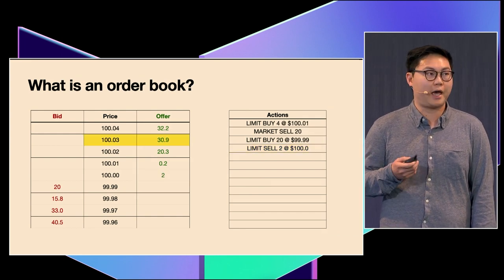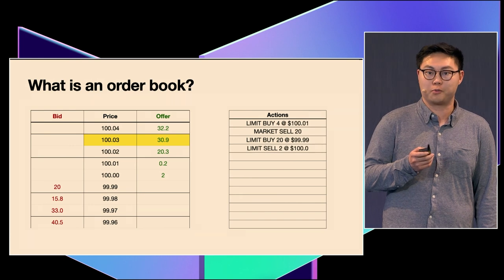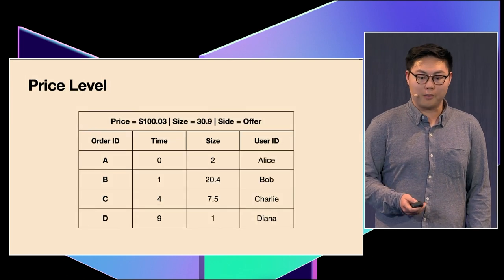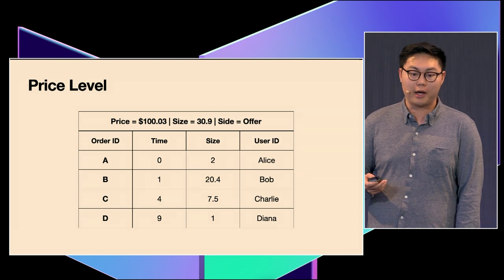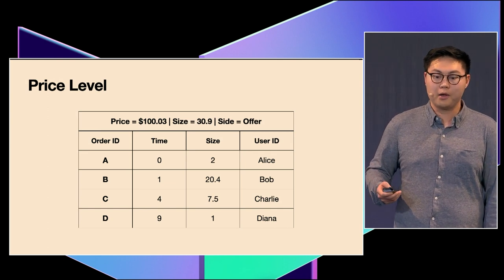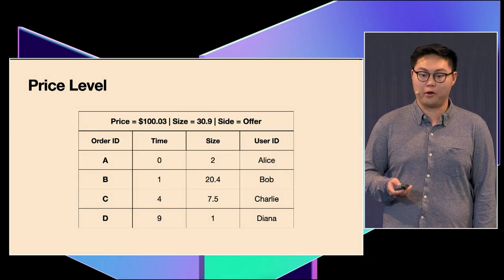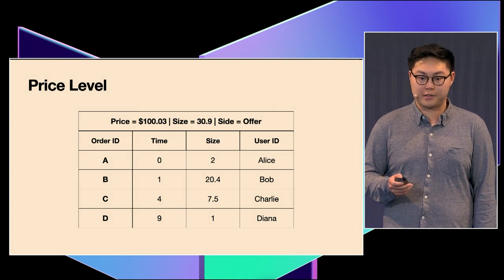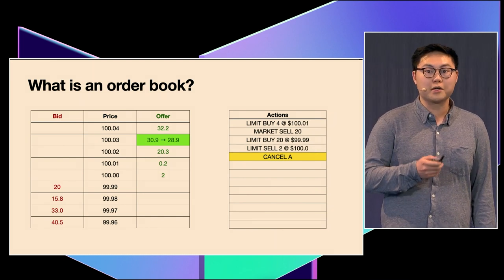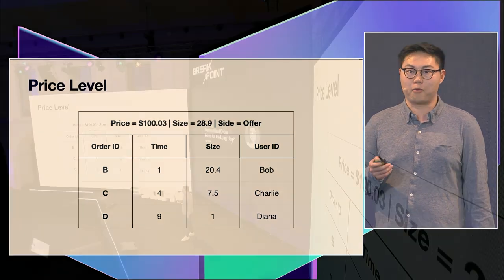The last action you can do is canceling. To show how that looks, we need to zoom into a particular price level. Here we're zooming into the level at $100.03. The size posted is 30.9, and we have four orders on this level, each with a different time posted, sorted by least recent to most recent. We have four users: Alice, Bob, Charlie, and Diana. If you sum the column of size, it adds exactly to 30.9. If we cancel Alice's order, whose order ID is A and has size 2, the level at $100.03 gets reduced from 30.9 to 28.9, and Alice's order is removed.